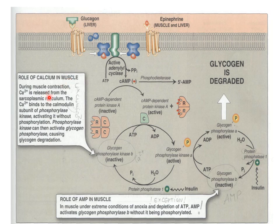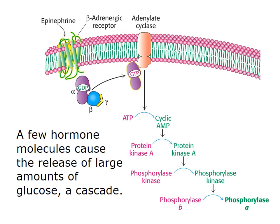In muscle, calcium directly converts inactive glycogen phosphorylase to its activated form, promoting glycogenolysis and degrading glycogen. The activated phosphorylase enzyme then breaks glycogen into glucose-1-phosphate. Protein phosphatase 1 also regulates glycogen metabolism — glycogen synthase is converted from active to inactive, inhibiting glycogen synthesis when epinephrine is present.